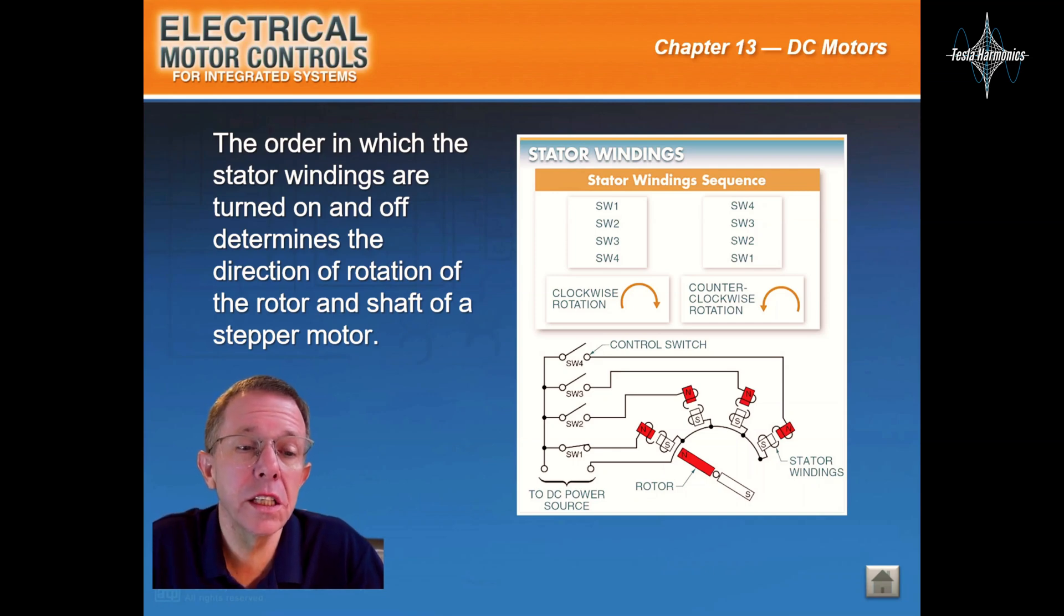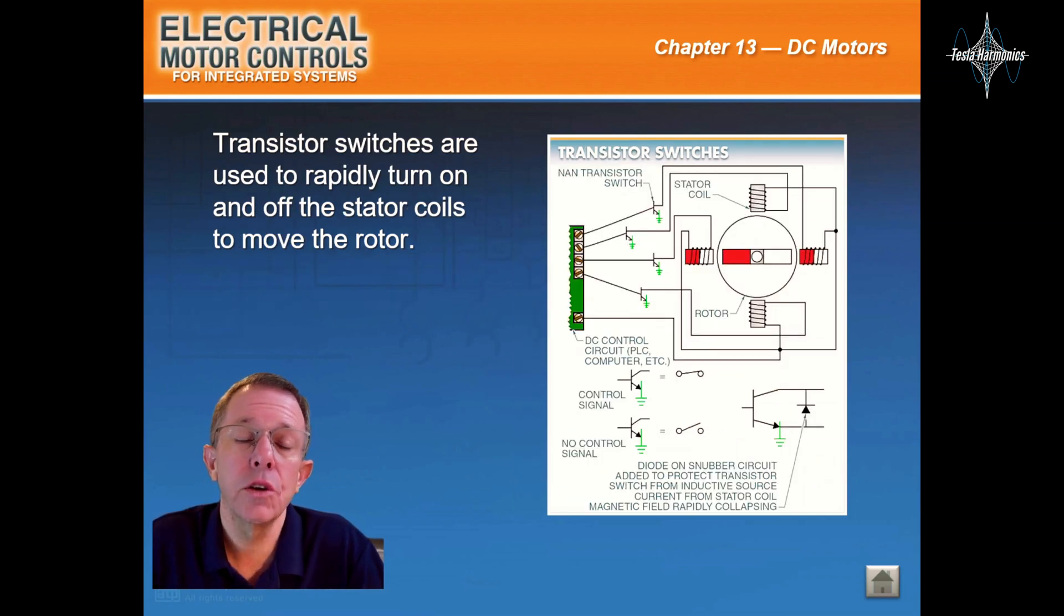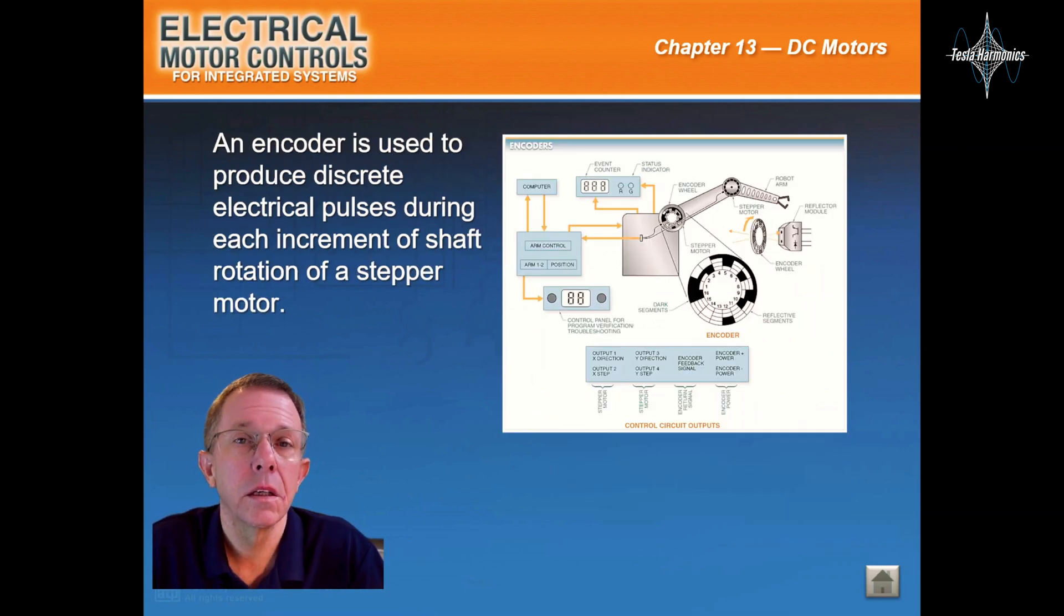The order in which the stator windings are turned on and off determines the direction of rotation of the rotor and shaft of a stepper motor. Transistor switches are used to rapidly turn on and off the stator coils to move the rotor. An encoder is used to produce discrete electrical impulses during each increment of shaft rotation of a stepper motor.